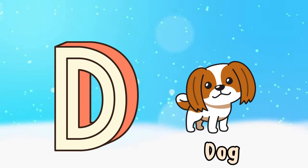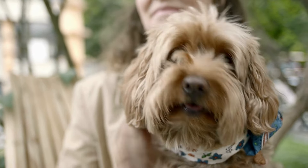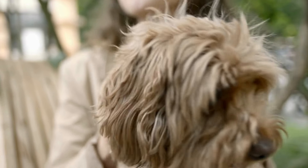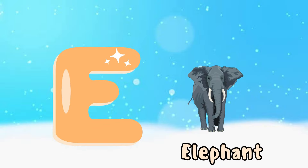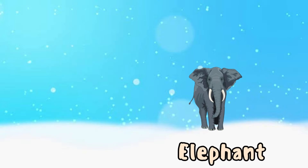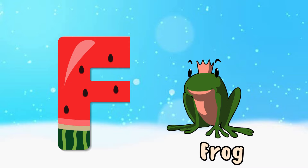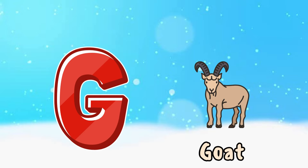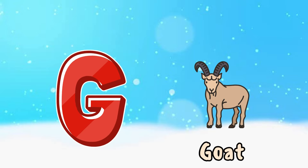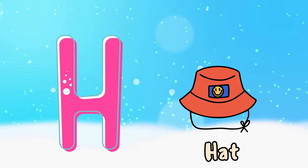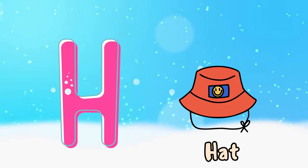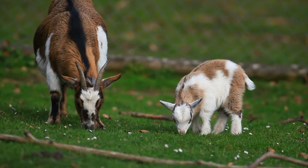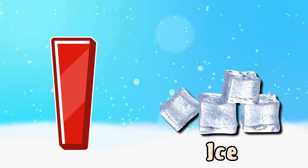Dum-dee-da-dum-dee-dum. E is for elephant, e-e-elephant. F is for frog, f-f-frog. G is for goat, g-g-goat. H is for hat, ha-ha-hat.